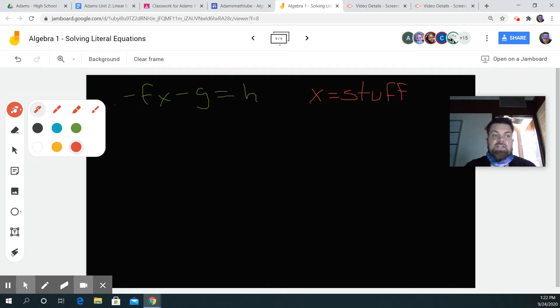On this equation, what we're asked to do is solve for x. So we have this equation. We need to move everything away from the x and make it look like x equals some stuff.